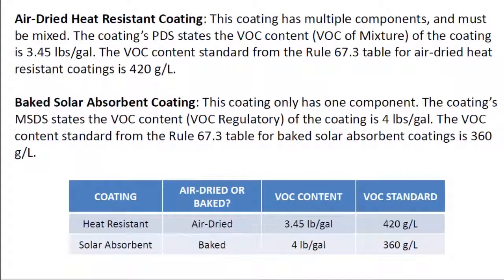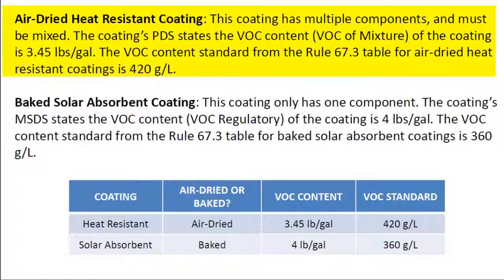As an example, let's imagine two metal parts coatings: an air-dried heat-resistant coating and a baked solar absorbent coating. The air-dried heat-resistant coating has multiple components and must be mixed. The coating's product data sheet states the VOC of the mixture is 3.45 pounds per gallon.